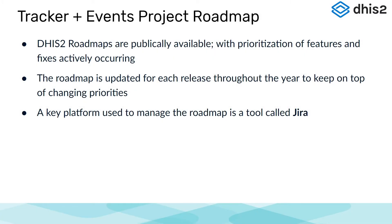The process to manage Event and Tracker features is ongoing throughout the year and is compiled as a roadmap for each release of DHIS2. This roadmap is driven both by internal processes as well as the community through use of the Community of Practice as well as a tool called JIRA. JIRA is one of the key platforms used to manage new feature development and bug fixes related to DHIS2, and it is where our roadmap is publicly available.